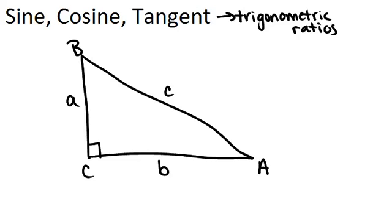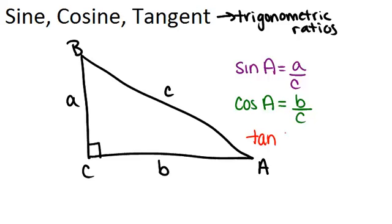there are three ratios that exist and those are sine, cosine, and tangent. So if we think about sine of angle A, it will equal a over c. If we think about cosine of angle A, it will equal b over c. And the last ratio is tangent, which you write as tan of angle A would equal a over b.